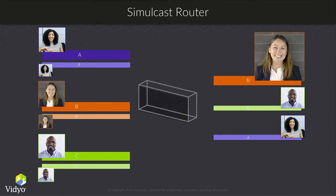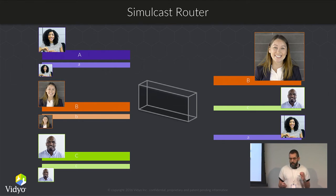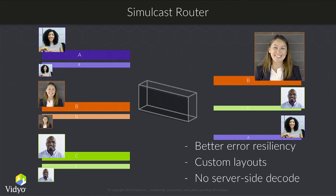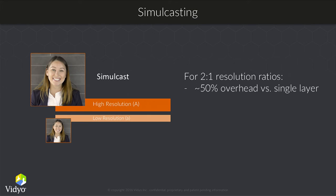A much better architecture is simulcast. Now you can send two separate streams — they both still have this interdependency, but the router can pick which stream to forward to the endpoint. This is much better for error resiliency and allows you to create custom layouts on the endpoint. This is a very common way of doing video conferencing right now and does not require any server-side decoding. The problem is the penalty: you're encoding the stream twice, creating about 50% overhead over a single layer, and sending two streams simultaneously creates a synchronization problem when switching.